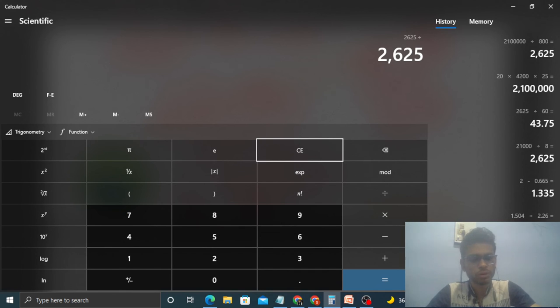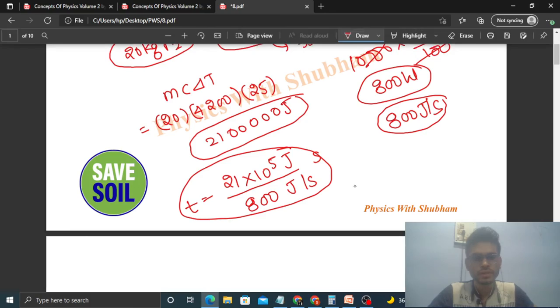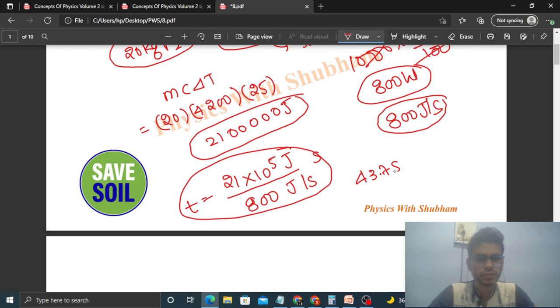If you have to find out in minutes, then you divide it further by 60. If you divide it, it is 43.75. So it is 43.75 minutes.